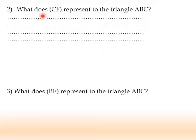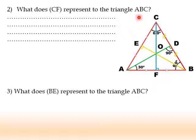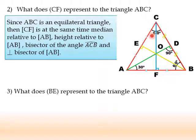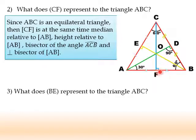Number 2: What does CF represent to triangle ABC? Since ABC is an equilateral triangle, CF is at the same time a bisector of angle ACB — it divides angle ACB into two equal adjacent angles ACF and FCB. It's a median relative to AB since CF is issued from vertex C to the midpoint F of segment AB. CF is also a height relative to AB, and since it's perpendicular to AB at its midpoint, then it's the perpendicular bisector of AB.